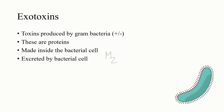Exotoxins are toxins produced by gram bacteria, both positive and negative. These are proteins made inside the bacterial cells. In contrast to endotoxins, which are found inside the bacterial cells, these proteins are made and excreted from the cells, as compared to endotoxins which are released on bacterial cell destruction.